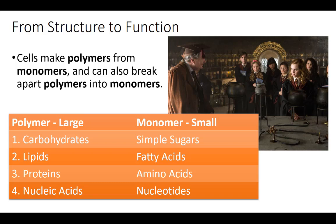Lipids are made up of fatty acids — lipids have a bunch of cool stuff in them. Proteins are very, very specific; if you mess one little thing up you can throw the whole thing off. Proteins are made up of amino acids — a long chain of amino acids. And nucleic acids are made up of nucleotides. So to summarize: carbohydrates are made of simple sugars, lipids of fatty acids, proteins of amino acids, and nucleic acids of nucleotides. Those are the polymers and their corresponding monomers.